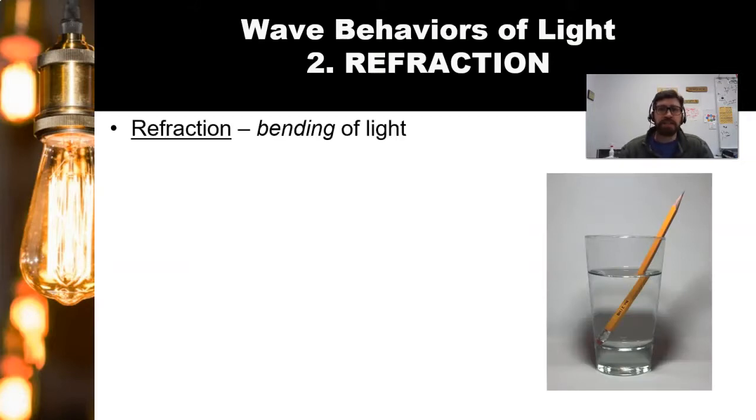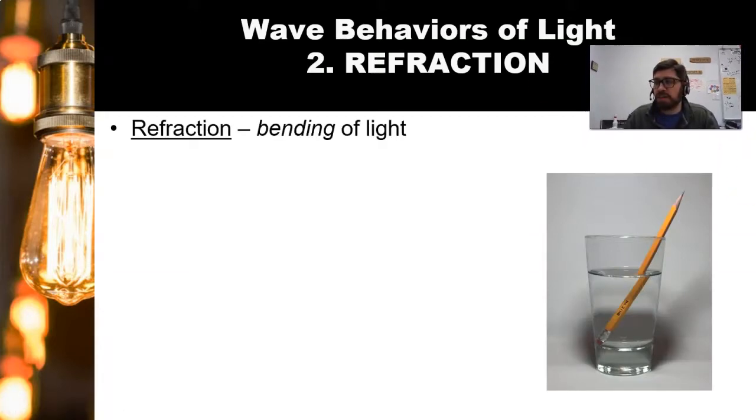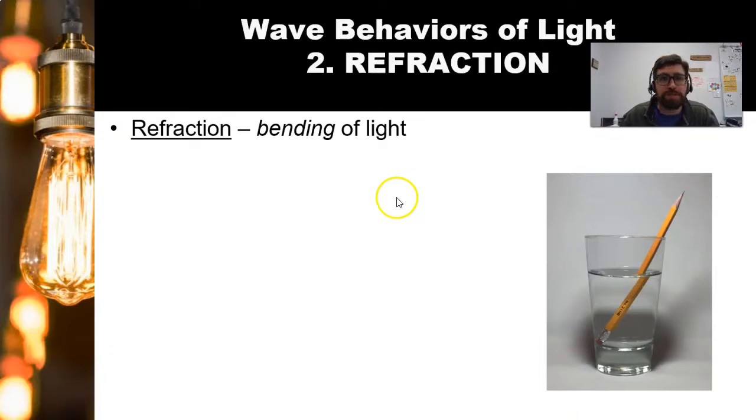It doesn't necessarily separate it from a particle because particles can bounce as well. But it's just one thing that light does that all other waves do as well. The second thing light does is refraction. We've also talked about this. Refraction is when light bends. But specifically, remember, this is about a medium change.